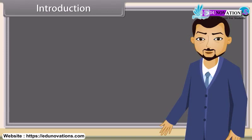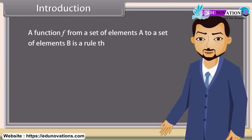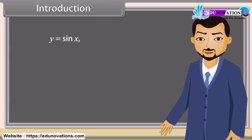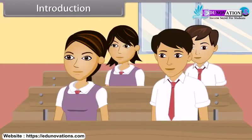Before we define the inverse trigonometric functions, we need to think about exactly what we mean by a function. A function f from a set of elements A to a set of elements B is a rule that assigns to each element x in A exactly one element f(x) in B. y = sin x, y = cos x and y = tan x are functions in the sense of this definition, with A and B being sets of real numbers.